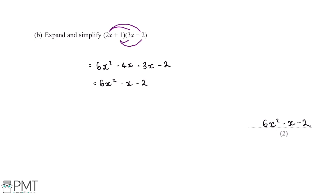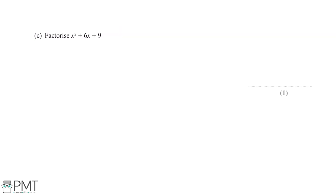This question is worth two marks: one mark for the original expansion and the second mark for the correct simplified answer. Next: factorize x squared plus 6x plus 9. When factorizing quadratics we want to find two numbers which multiply together to make the constant — the numerical term on the end — and two numbers which add together to make the x coefficient, which is this 6 here.